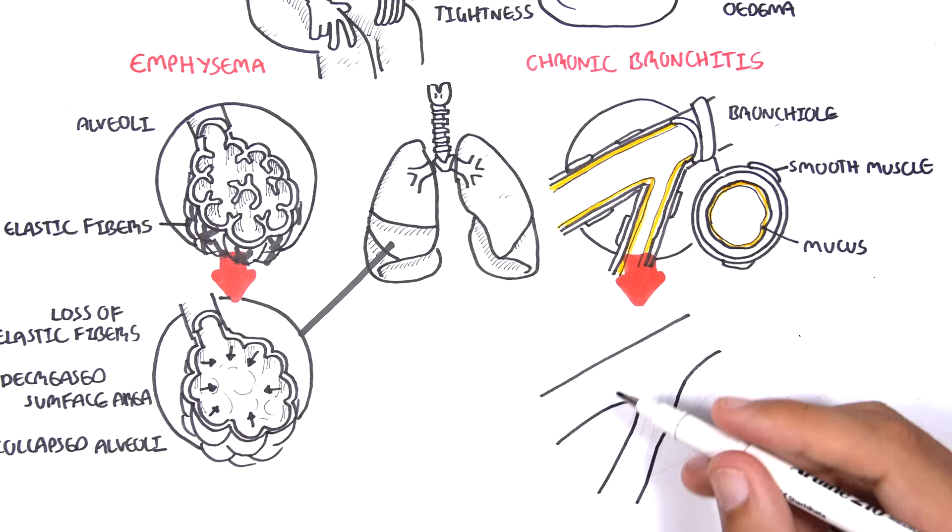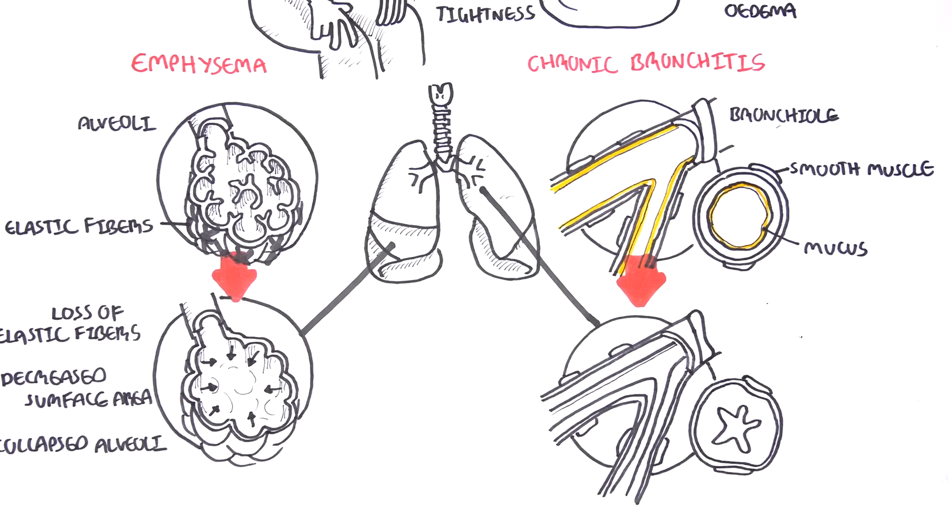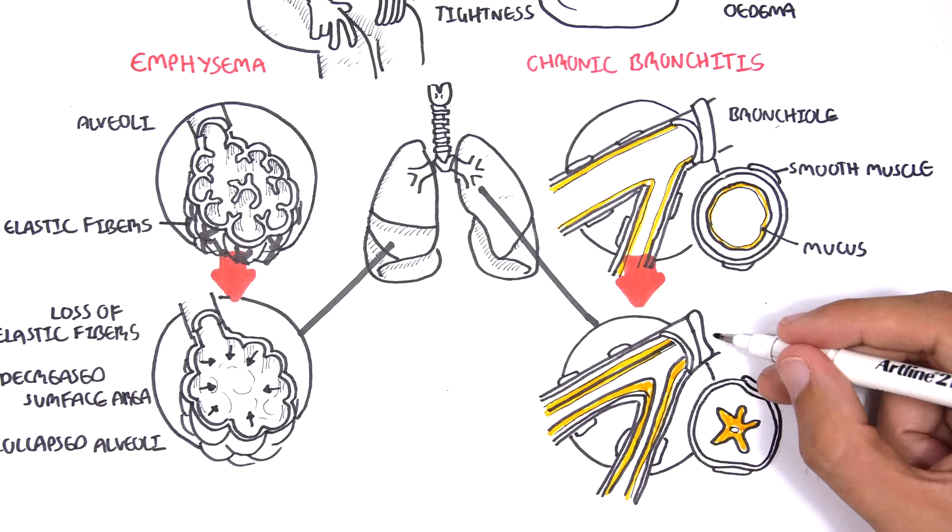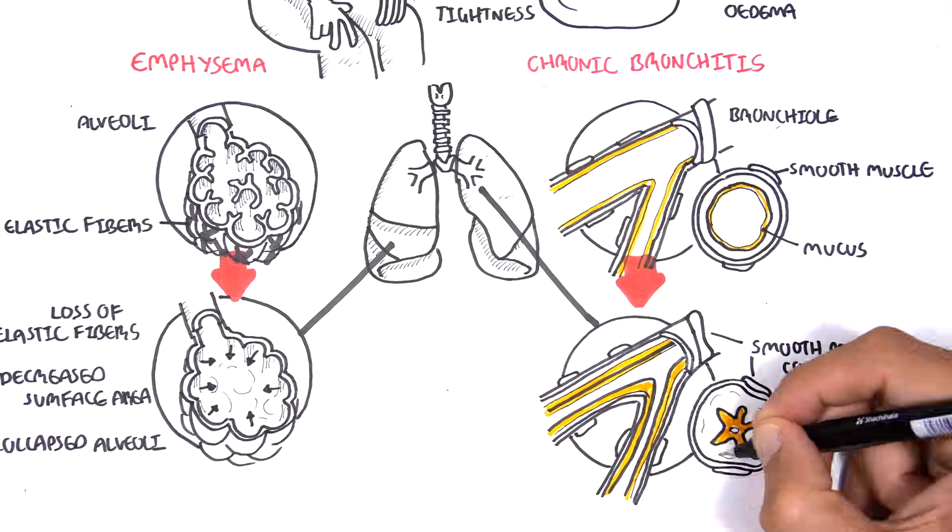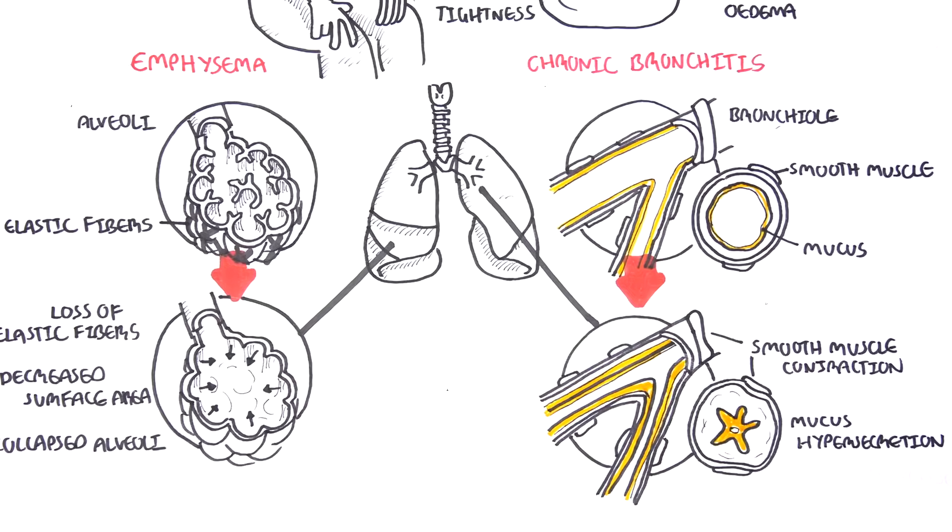In chronic bronchitis, we have smooth muscle hypertrophy and contraction, as well as mucus hypersecretion. This all leads to difficulty breathing.